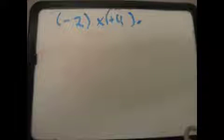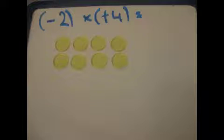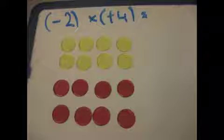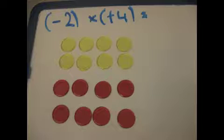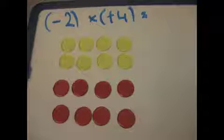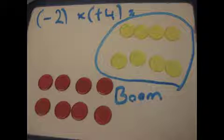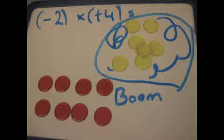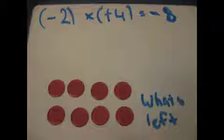When you multiply a positive by a negative, you need to use 0 pairs. This equation means you take away 2 groups of positive 4, so you need to first add this positive 4. Since we can't change an equation, we have to add 0 pairs so we can take away the positive 4. Those 2 groups of 0 pairs go BOOM! What's left in the aftermath? Negative 8!